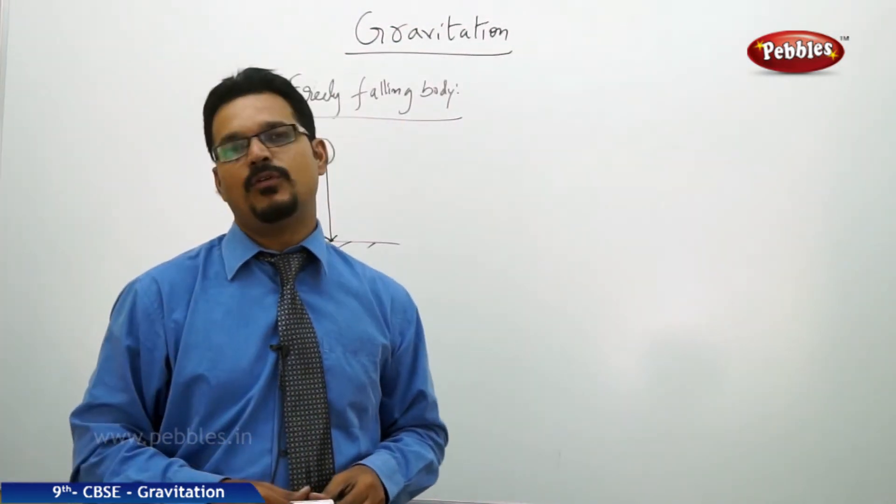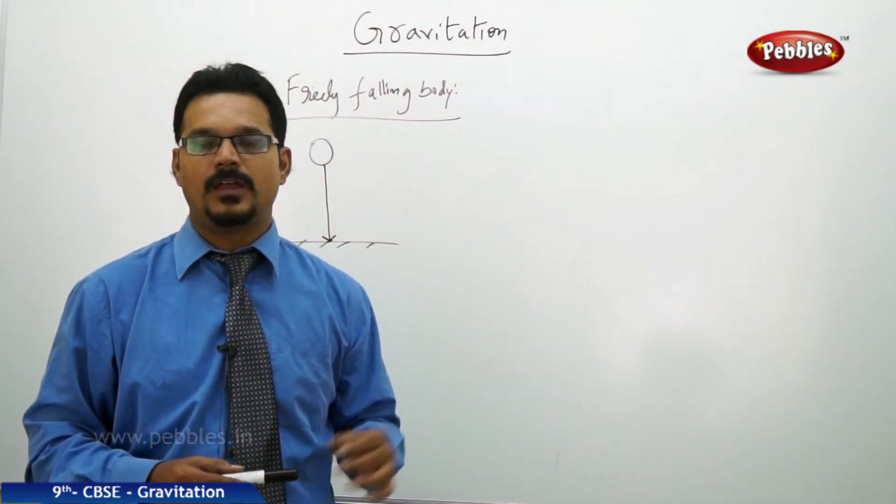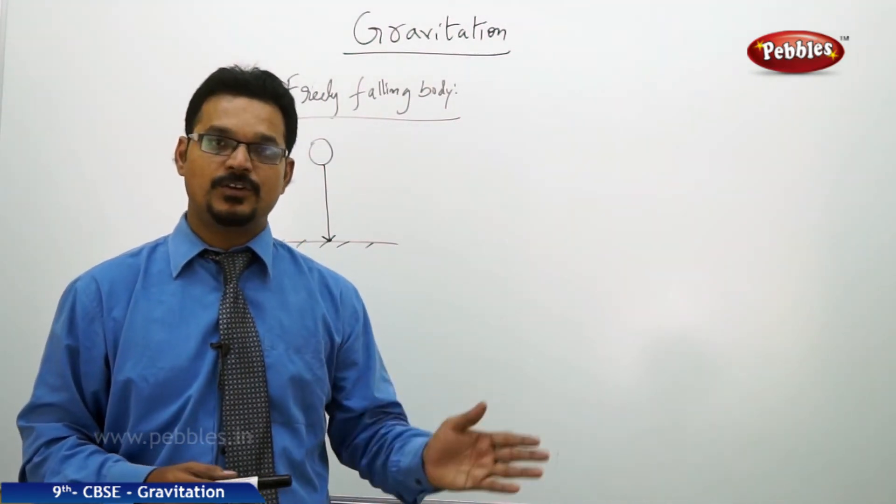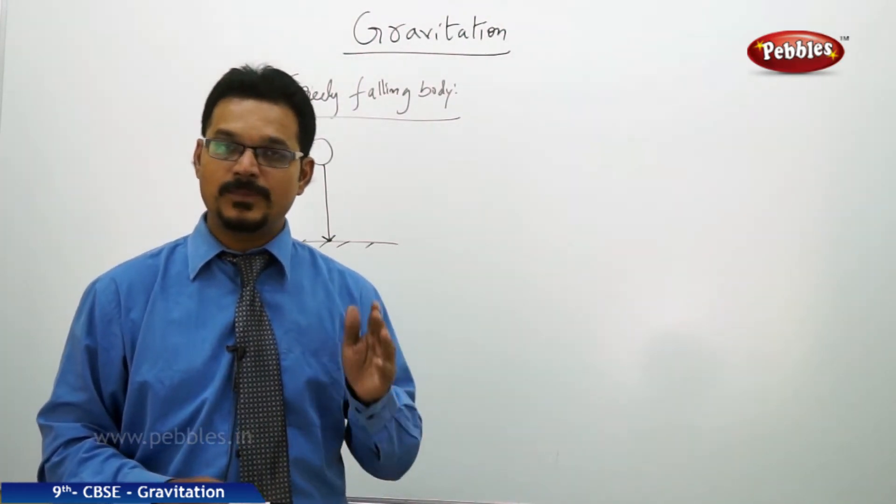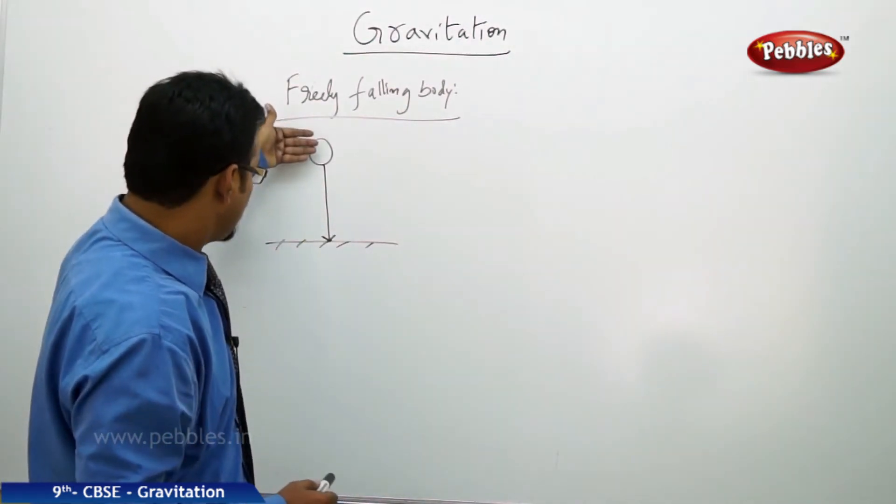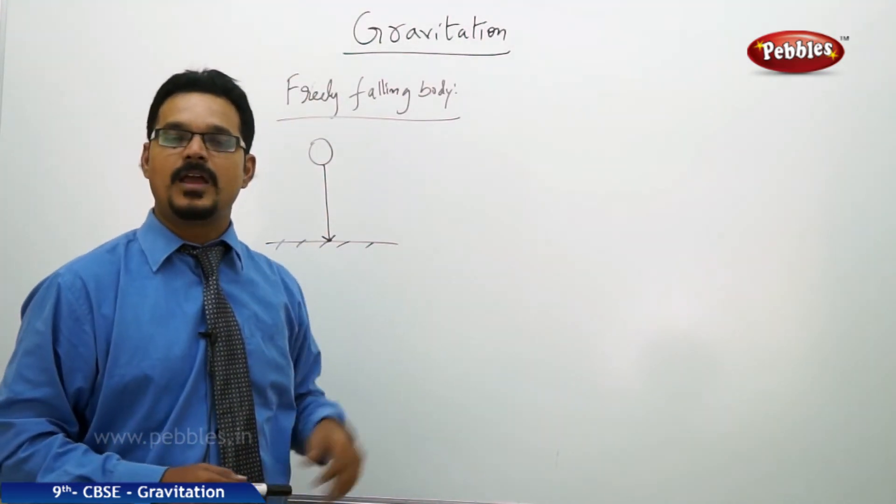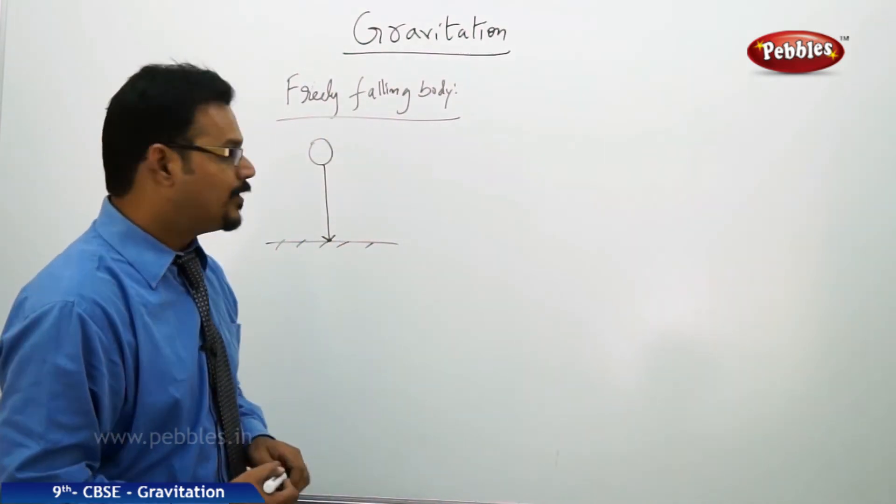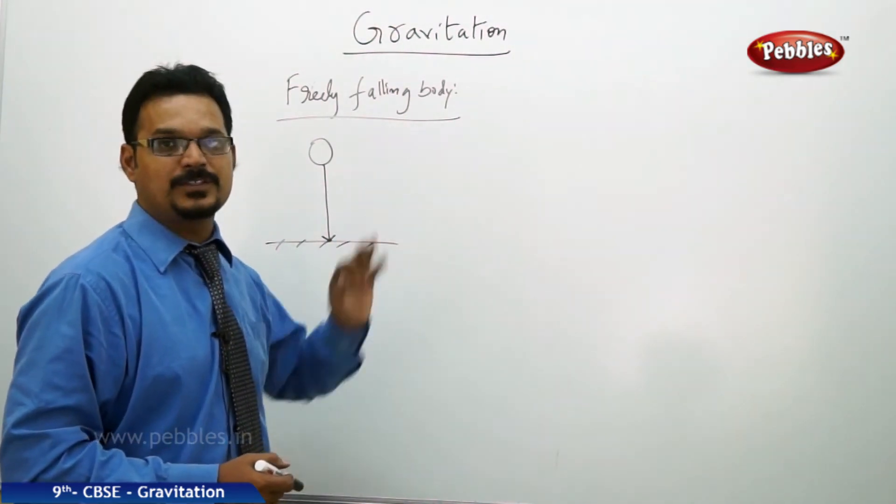We have discussed about equations of motion in a straight line path in the previous chapter called motion chapter. In that chapter we discussed 3 equations: v equal u plus at, s equal to ut plus half at square, v square minus u square equal to 2as. These 3 equations can also be applicable in freely falling body, because freely falling body has a straight line motion. The only thing, the difference is, it is falling downwards. And we know that it is falling downwards because of earth gravity. Therefore there are some conditions for this case, and these conditions can be applicable to the equations of motion.